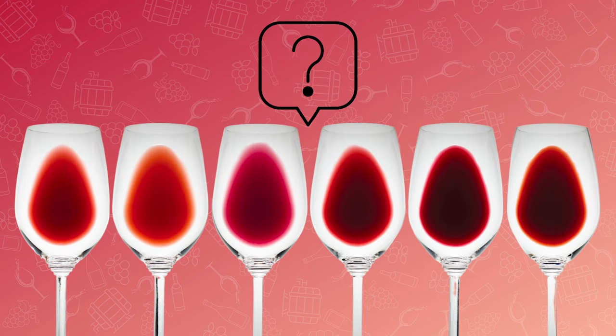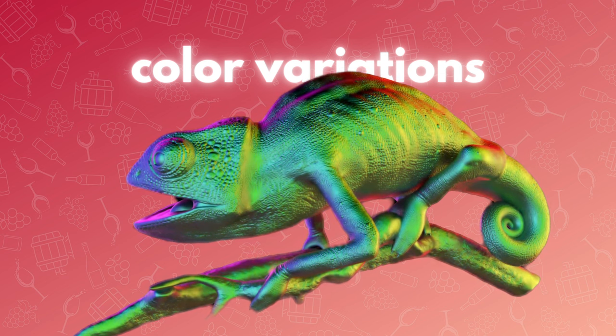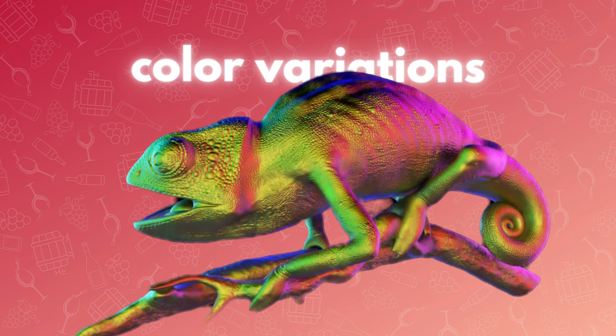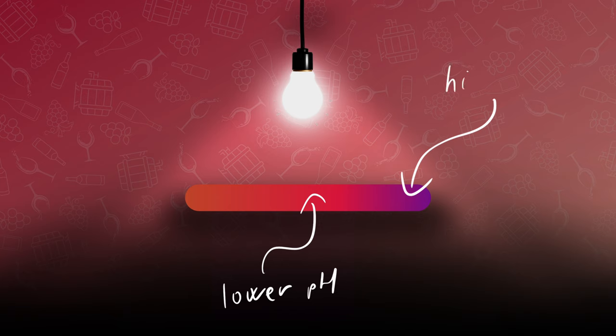But why do different red wines have different color variations if all of them contain the same anthocyanin? Well, anthocyanin is kind of like a chameleon. It changes color all the time based on the environment it is in. When the wine has a lower pH level, meaning higher acidity, it gets a bright red color. On the other hand, if the wine has a higher pH level, it is going to get more bluish hue, which causes a purple-like wine color.